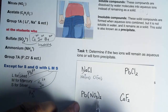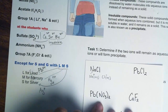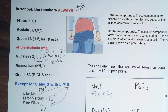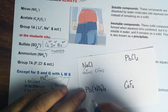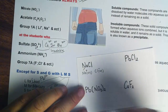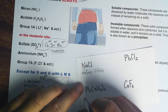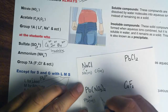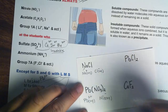What about lead nitrate? Remember we have the exception with lead in LMS, but in this case we go back to rule number 1 — nitrate. Any compound with nitrate will always be soluble. So it will form aqueous ions: Pb²⁺ aqueous and NO₃⁻ aqueous.